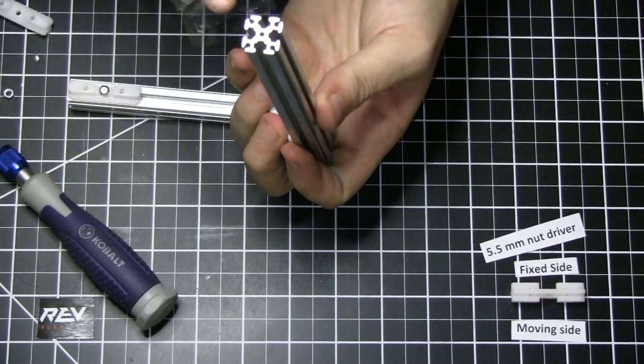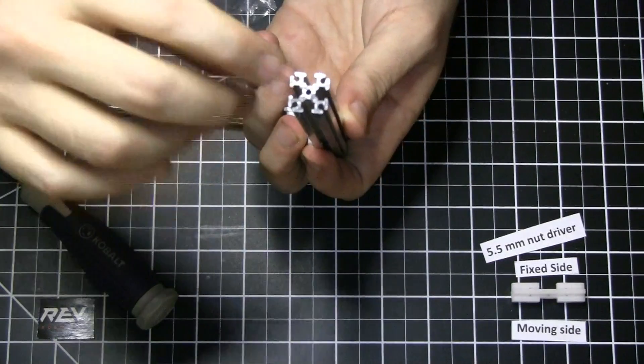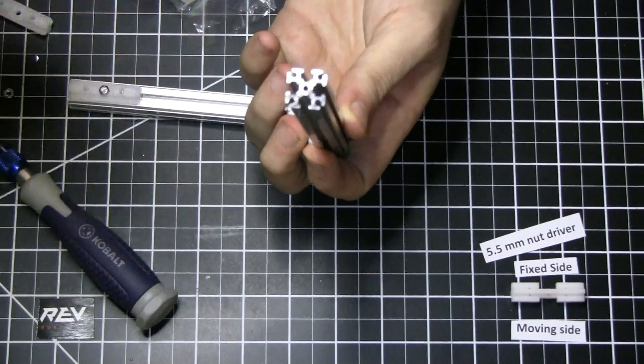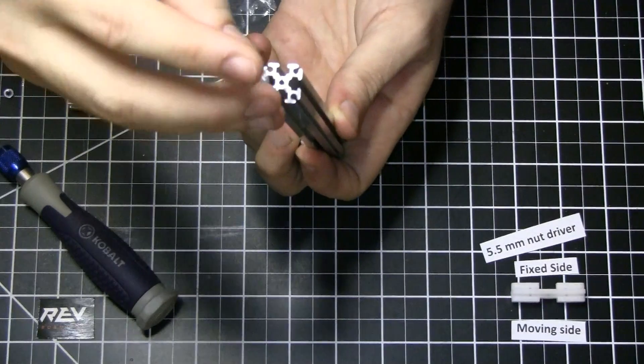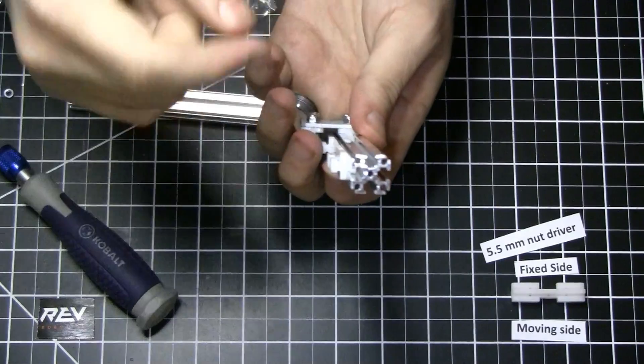Also when you cut the extrusion sometimes you'll get a burr on the end of the part in the slot. You want to make sure you clear those out with a file or a small screwdriver so that you can easily insert these. You don't want those small little burrs going into the slot and creating tension.